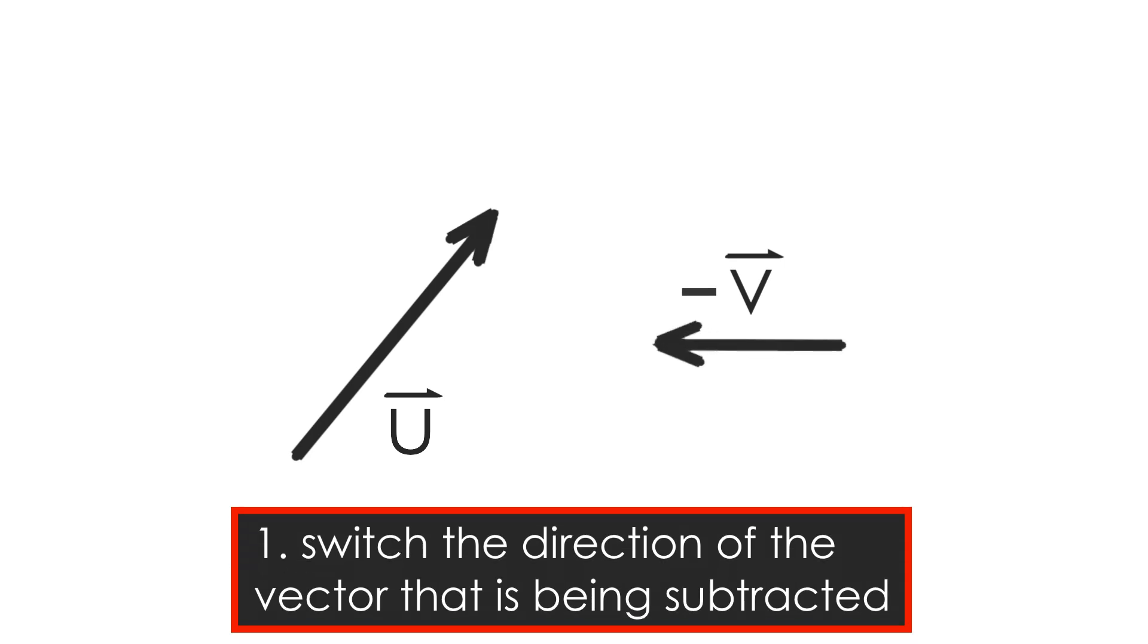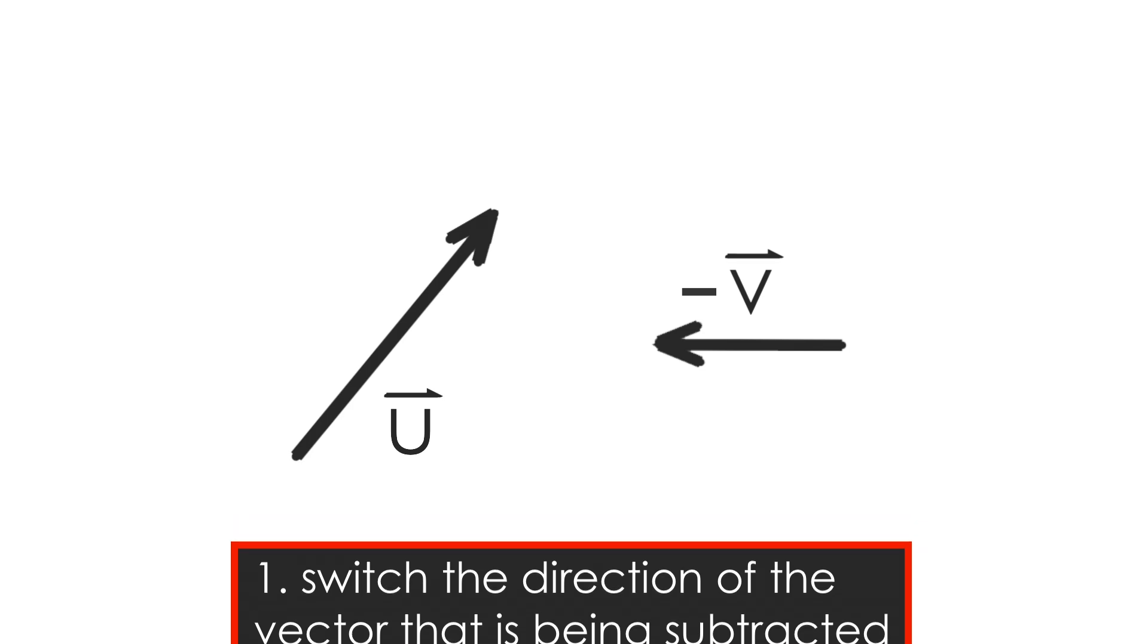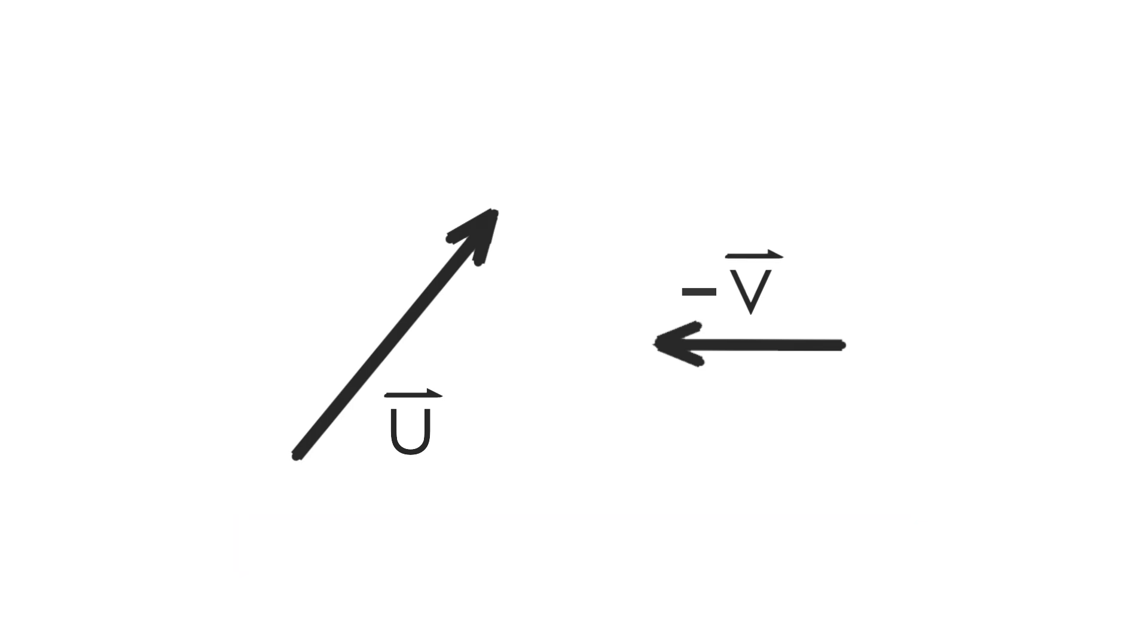Remember, multiplying a vector by a negative changes its direction. So if this vector v were heading due east, negative v now heads due west. The rest of the process is the same.